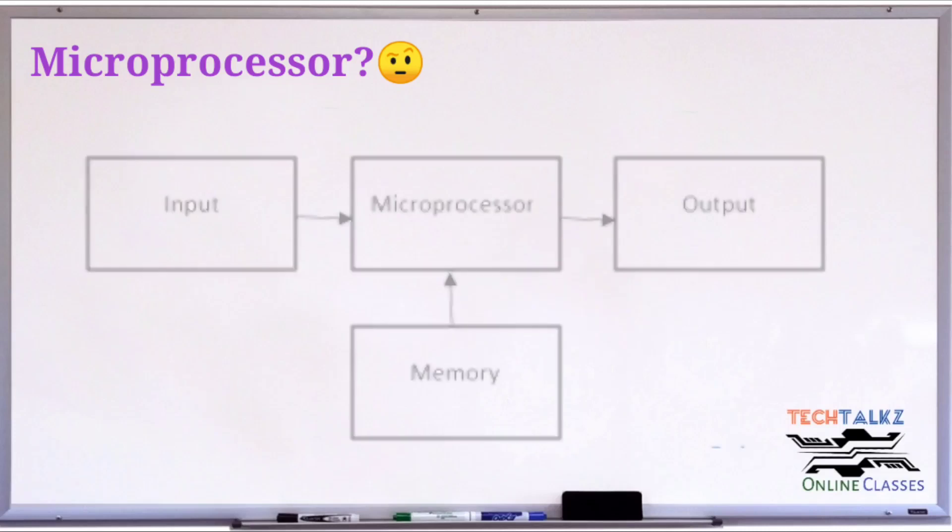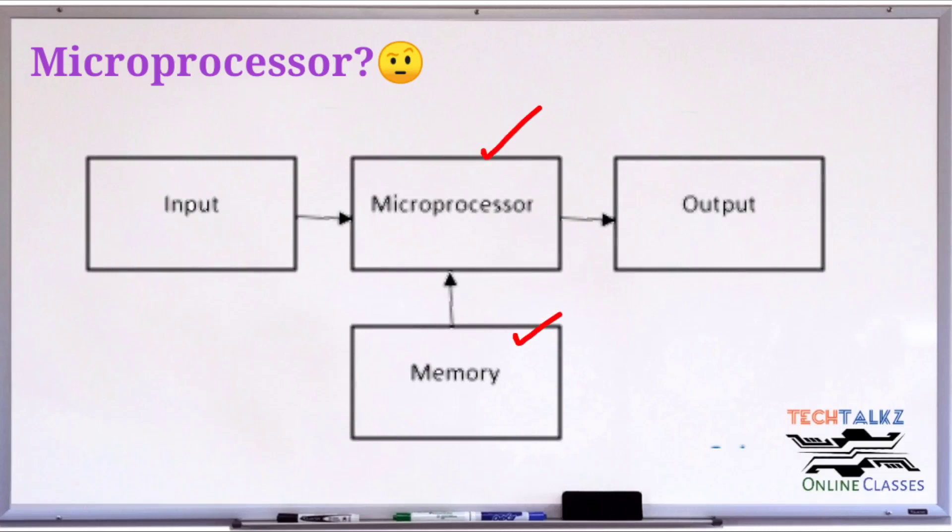A typical programmable machine can be represented with four main components: Microprocessor, Memory, Input and Output. These four components work together or interact with each other to perform a given task. That's why it is called a system.